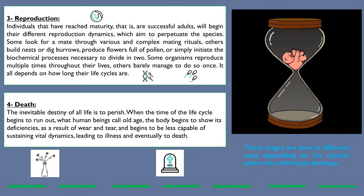Reproduction. Individuals that have reached maturity, that is, are successful adults, will begin their different reproduction dynamics, which aim to perpetuate the species. Some look for a mate through various and complex mating rituals. Others build nests or dig burrows, produce flowers full of pollen, or simply initiate the biochemical processes necessary to divide in two. Some organisms reproduce multiple times throughout their lives; others barely manage to do so once. It all depends on how long their life cycles are.